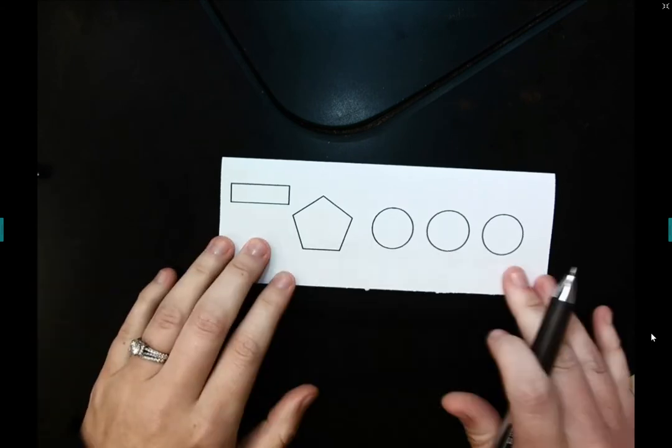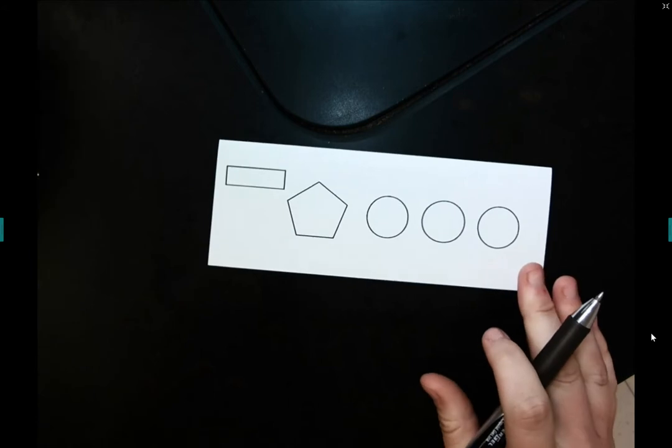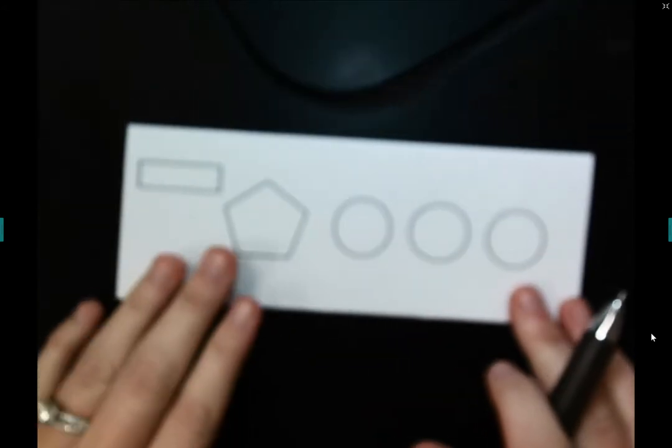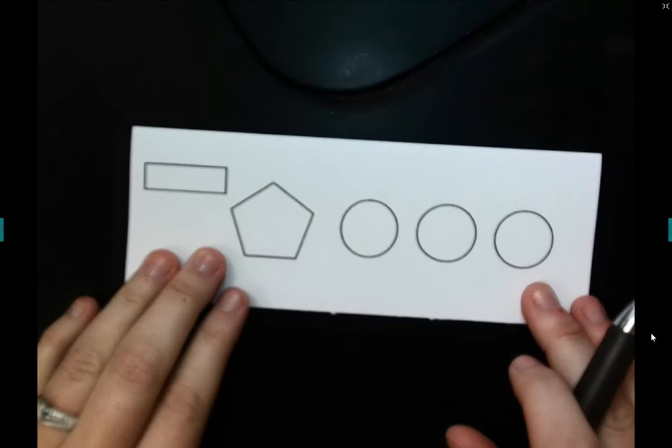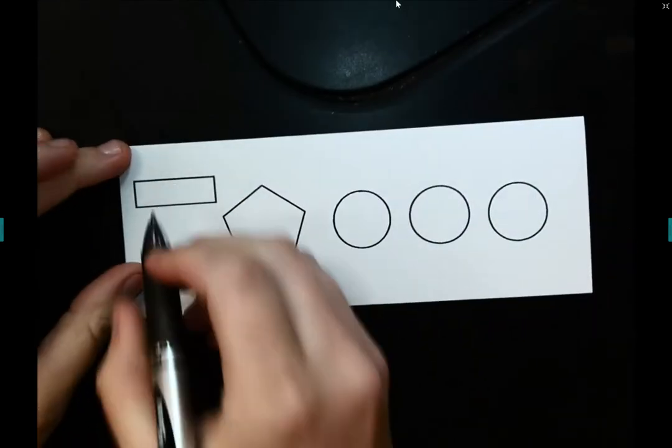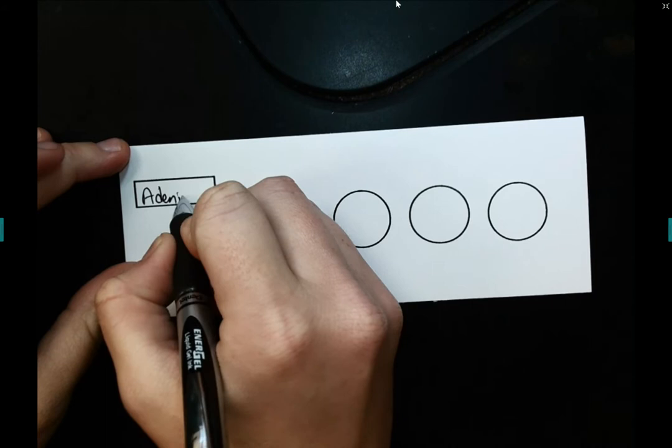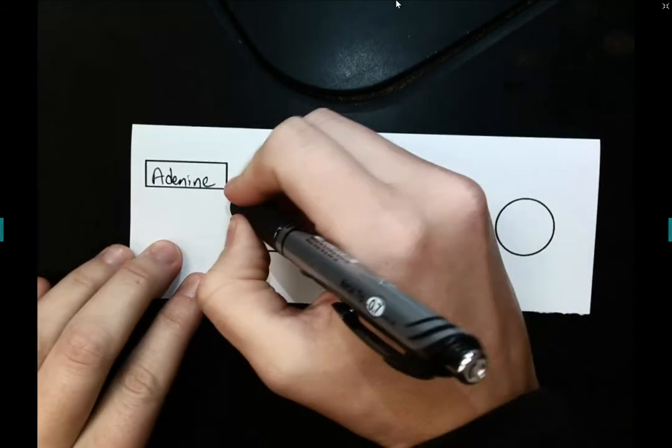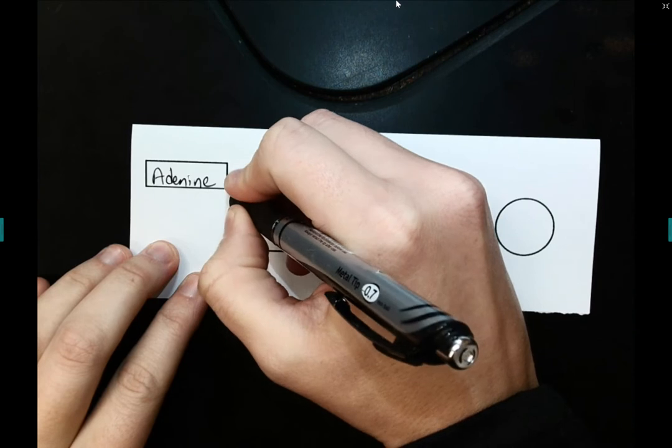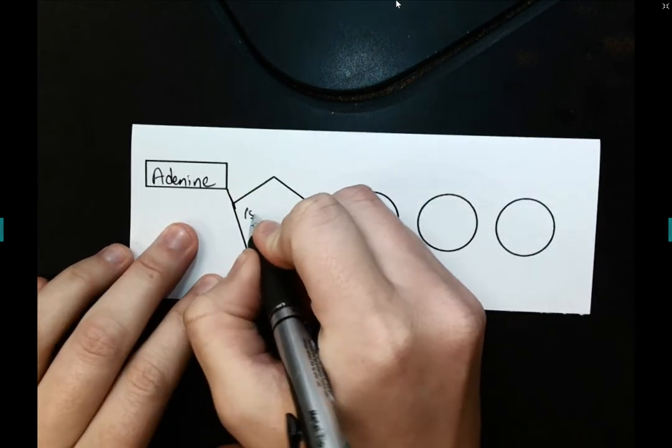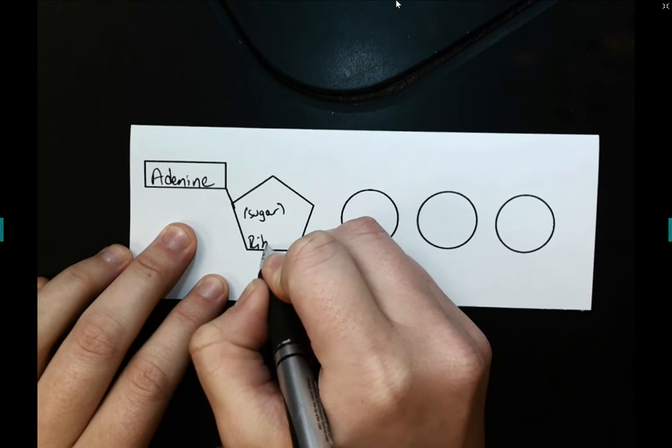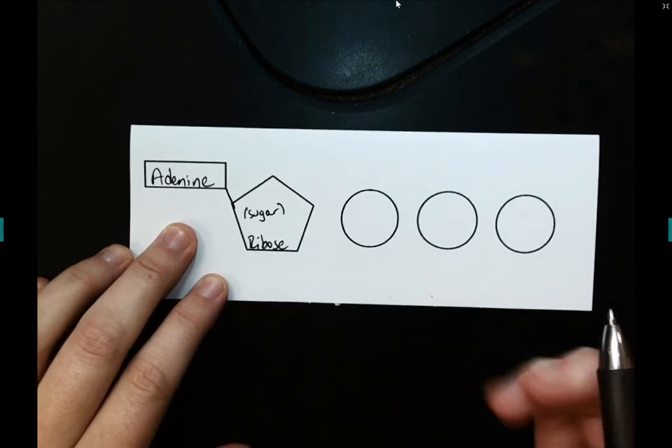So this is my ATP molecule. So this part of the ATP molecule is called adenine. And the adenine connects to the sugar. And specifically, this is a ribose sugar.